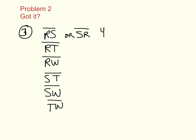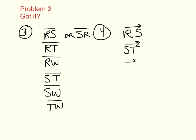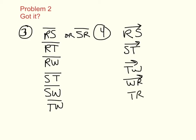Number four: what are all the rays? You could say ray RS — you could also name it ray RT or ray RW, since R is your endpoint and any other letter on that ray gives the same ray. You could also say ray ST or ray TW. Going in the other direction: ray WR, ray TR, and ray SR.